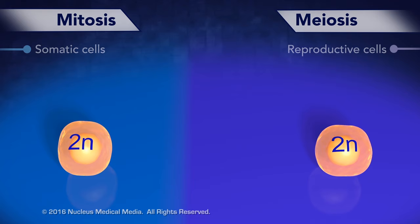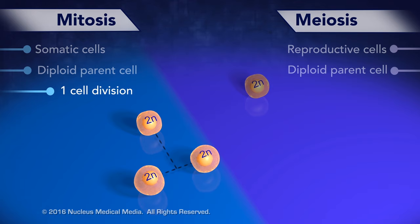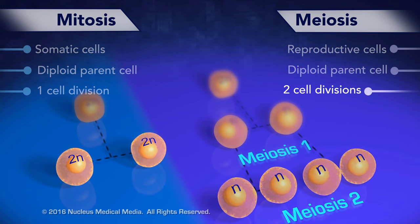The original cell in both mitosis and meiosis is diploid. Mitosis consists of one cell division, while meiosis consists of two stages of cell division called meiosis I and meiosis II.